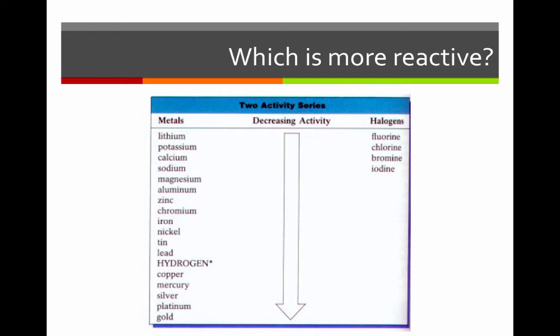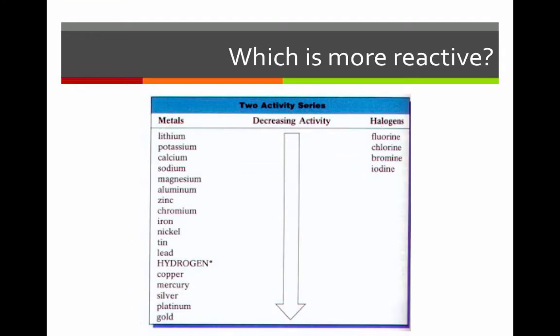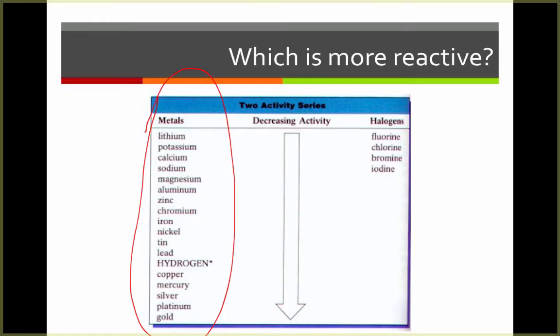So how do we determine which element is most reactive? Well, we can look at an activity series. In this activity series, we see that the most reactive elements are at the top and the least reactive elements are at the bottom. Notice if we're dealing with a metal replacing metal or a metal replacing hydrogen reaction, we're going to look on this side of the activity series.